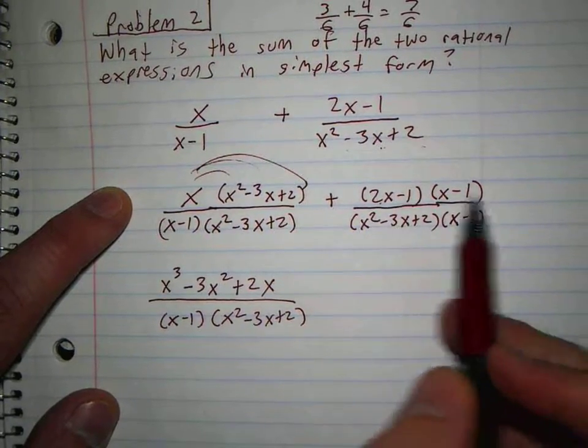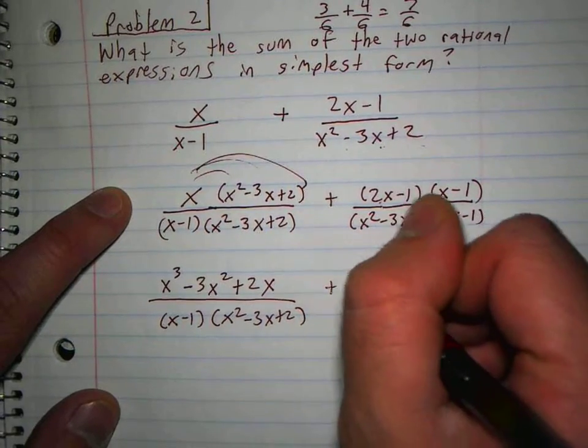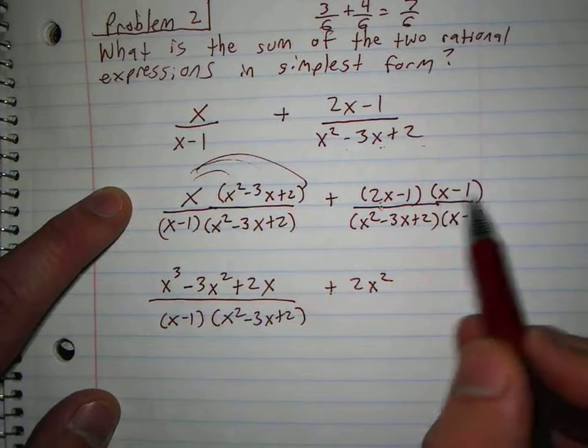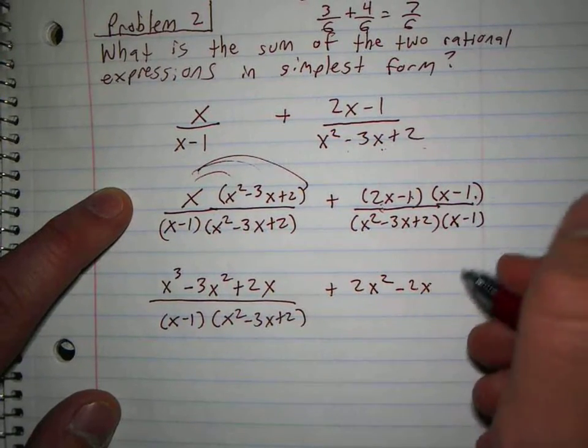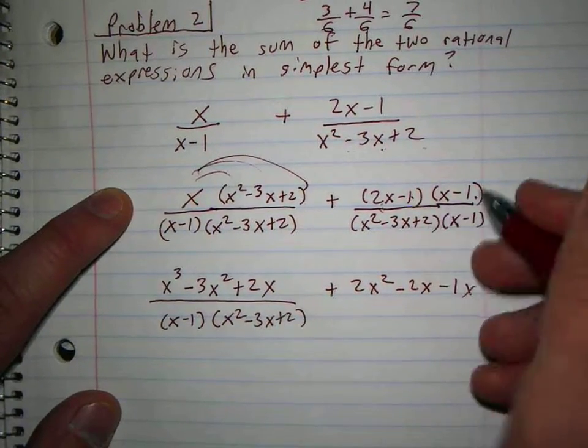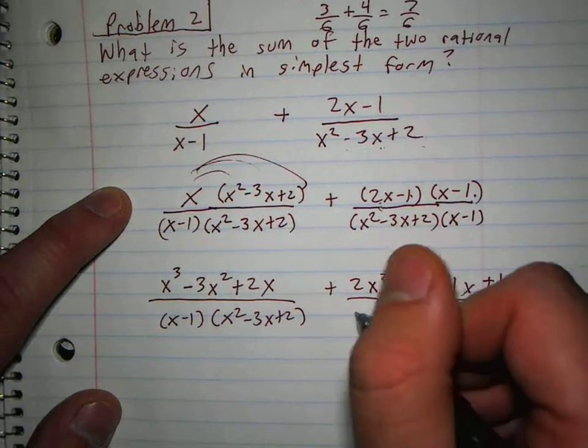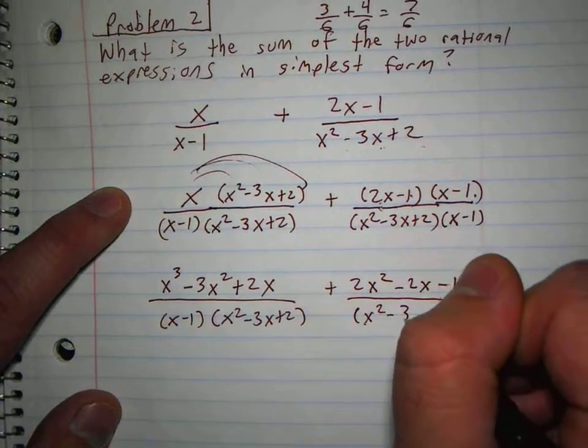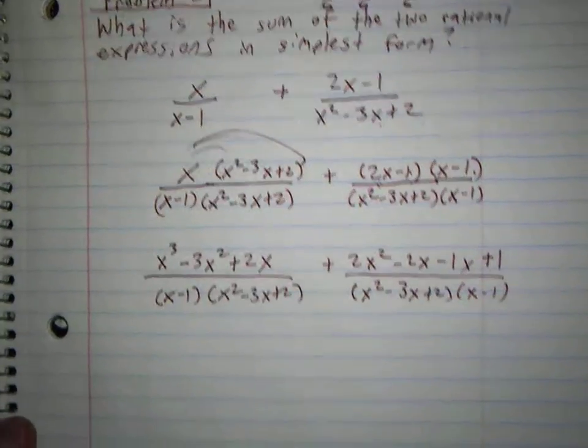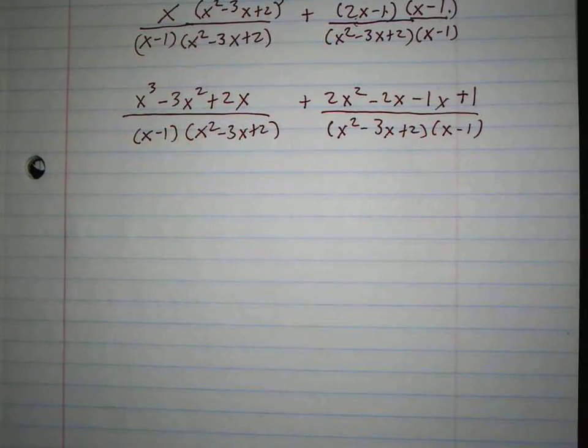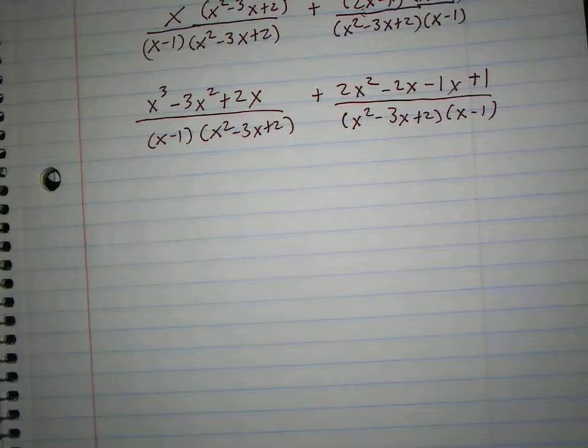And then any time in the denominator just keep it the same. And over here I'd have to distribute those two. So 2x times x is 2x squared, 2x times minus 1 is minus 2x, minus 1 times x is minus 1x, minus 1 times minus 1 plus 1. Now these are the same so I can combine the fractions.